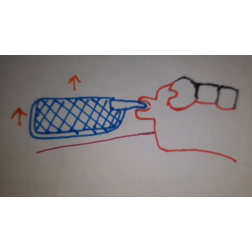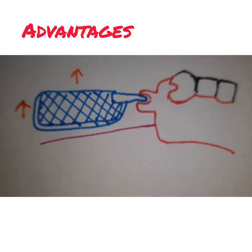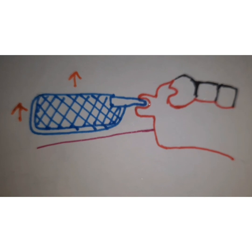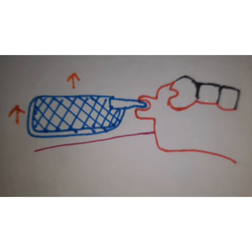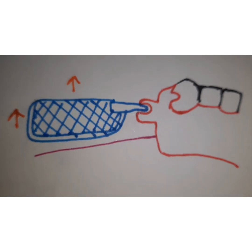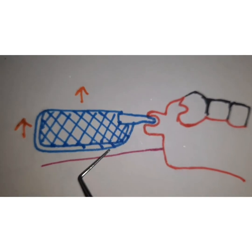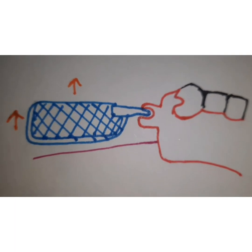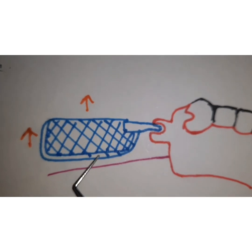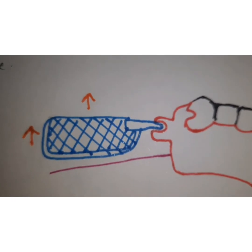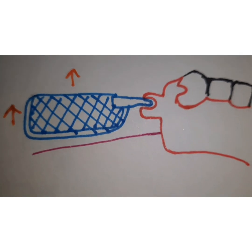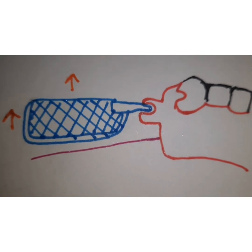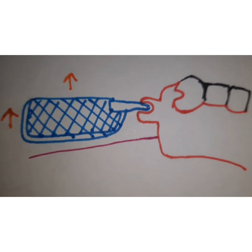The advantages are that direct retention is minimized — fewer clasps are required. They are useful in distal extension cases by breaking stress between the residual ridge and the abutment teeth. Additionally, since the denture base breaks the stress, it stimulates the supporting mucosa during function, which benefits the overall health of the tissues.